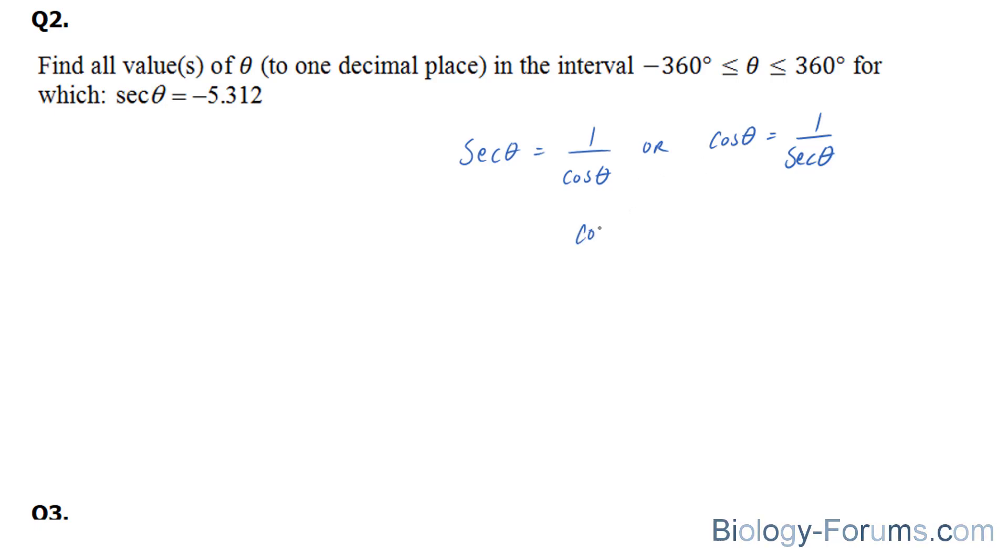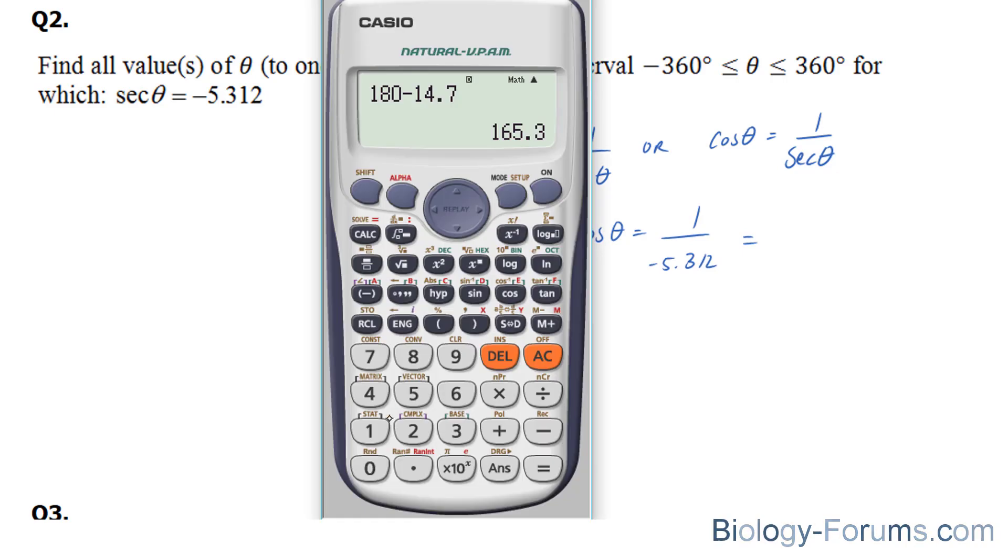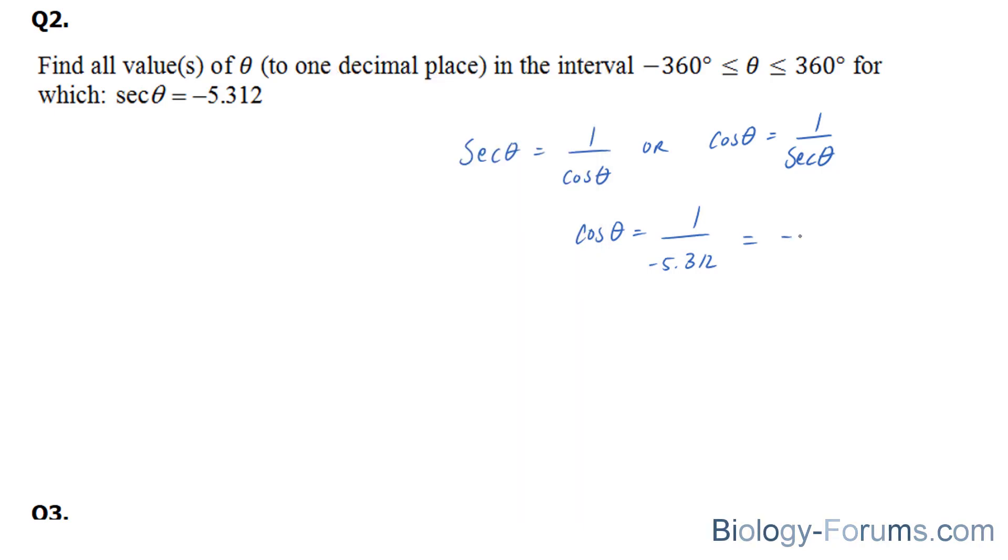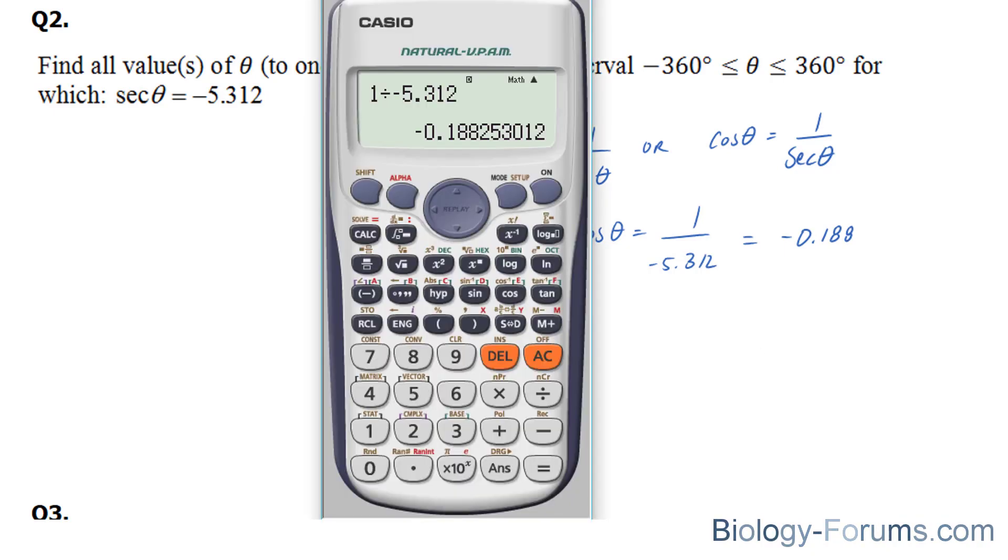Let's find out the cosine version. It's really easy to do—one over this number, this ratio. We end up with 1 divided by negative 5.312 equals negative 0.1882.